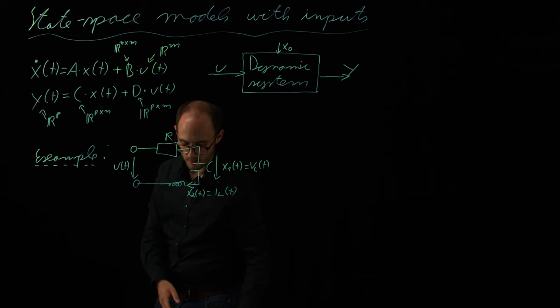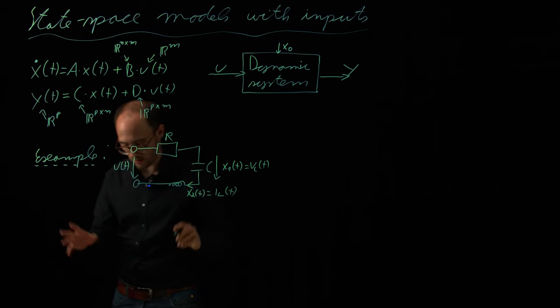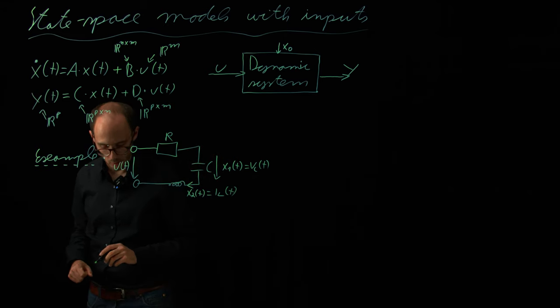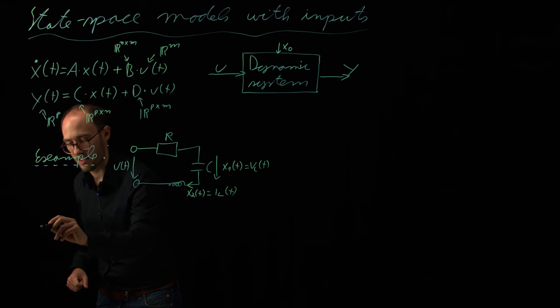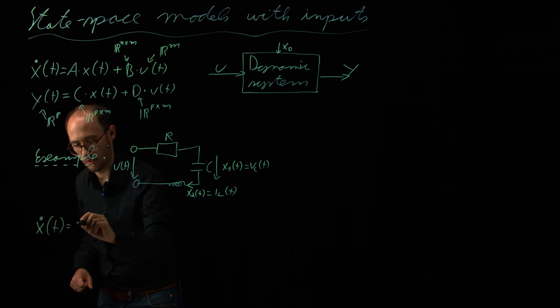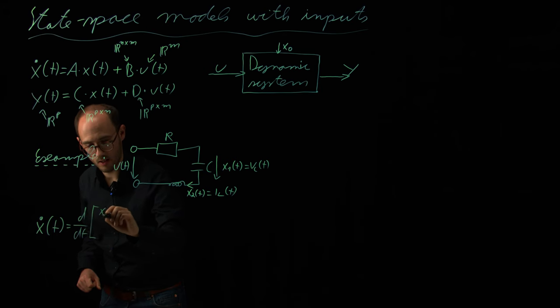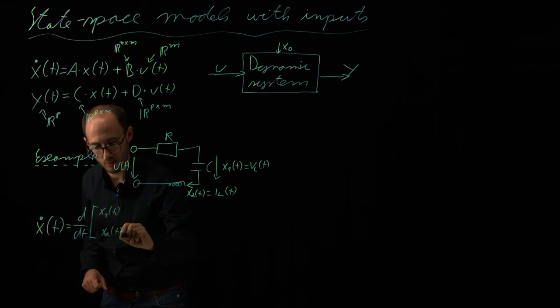And using basic principle calculus, we do not go into a deep derivation. But what we will basically get from this is, again, our x dot of t, which is d dt, x1 of t, x2 of t.